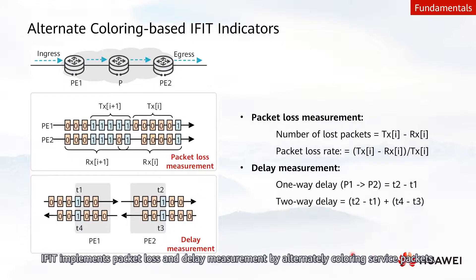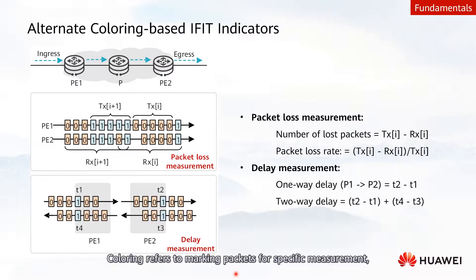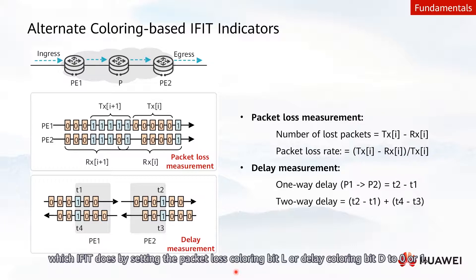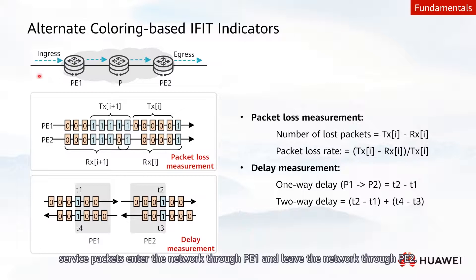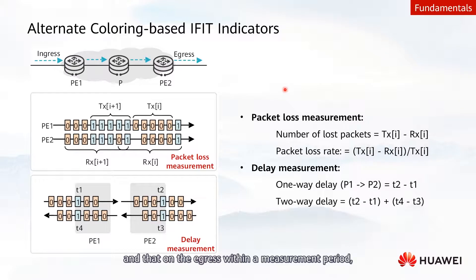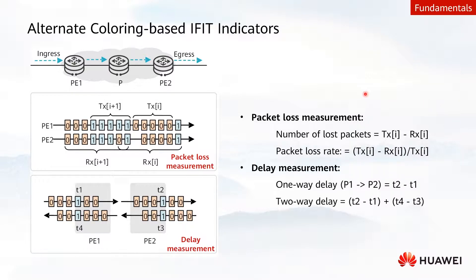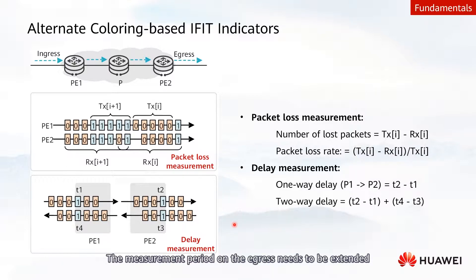Specifically, iFIT implements packet loss and delay measurement by alternately coloring service packets. Coloring refers to marking packets for specific measurement, which iFIT does by setting the packet loss coloring bit L or delay coloring bit D to 0 or 1. In the following example, service packets enter the network through PE1 and leave the network through PE2. By calculating the difference between the number of packets on ingress and that on egress within a measurement period, you can obtain packet loss indicators of the service flow. The measurement period on egress is extended to prevent out-of-order packets from affecting the measurement result.